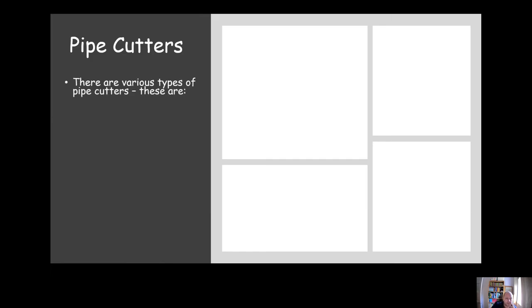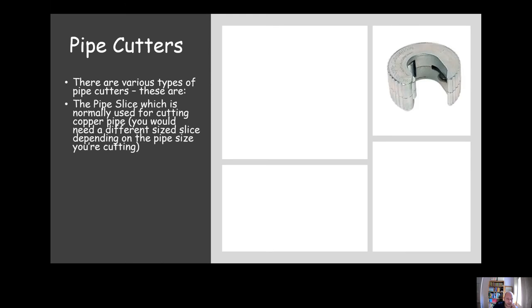First tool we're going to look at are pipe cutters. There's lots of different types of pipe cutters. The one we can see up here on the top right is a pipe slice. We can only use that for cutting specific sizes of copper. This particular one has got a cutting wheel inside there which periodically will need to be replaced if it becomes chipped or damaged.